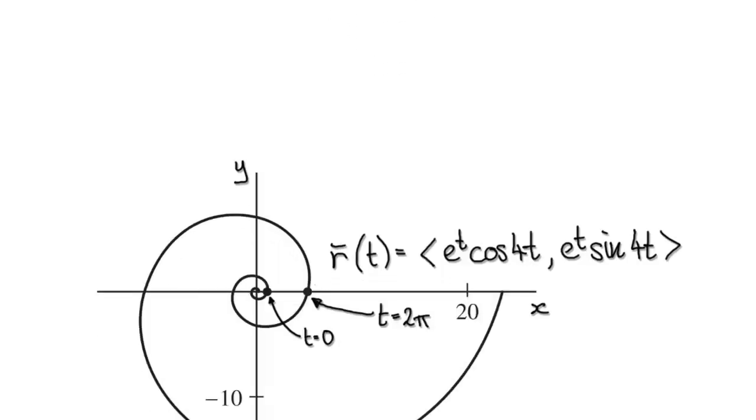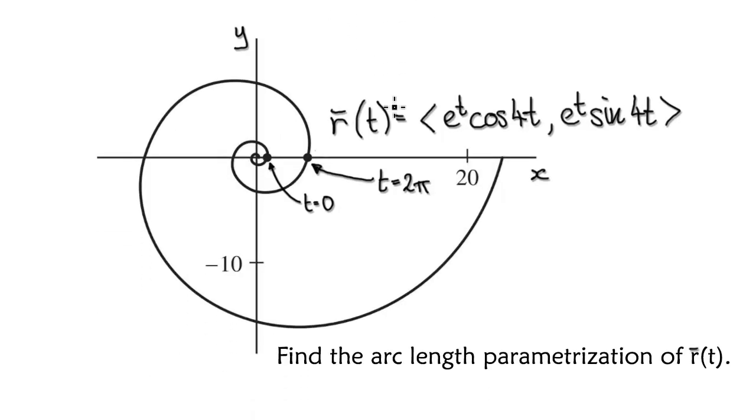So this is Bernoulli's spiral, and the position vector is given by this. The position vector tells us the location as time goes on, it gives us this vector as time goes on. And our job is to find the arc length parameterization of r(t).